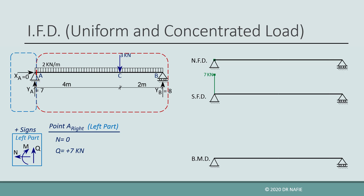To find the value of the internal bending moment, we take the moment of all the forces located in the left part about the considered point, which is point A. The moment about point A will be zero because all the forces in the left part pass through point A.